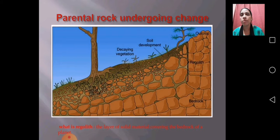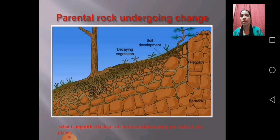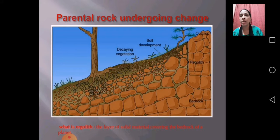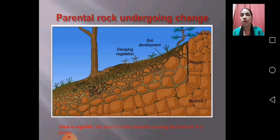Parent rock keeps undergoing changes. You might have heard that the height of certain hills is deteriorating due to wind, rain, and weather changes — that is due to physical weathering. Wind is there, rainfall is always there, temperature is one factor causing this parental rock to change. The characteristics of the parent rock and the rock particles we get after its decay are the same.